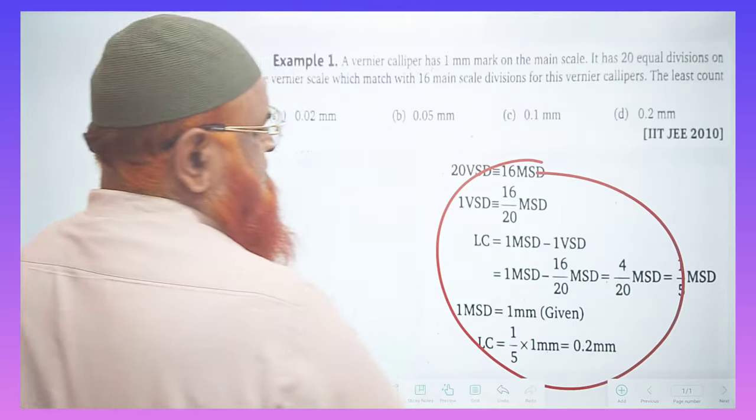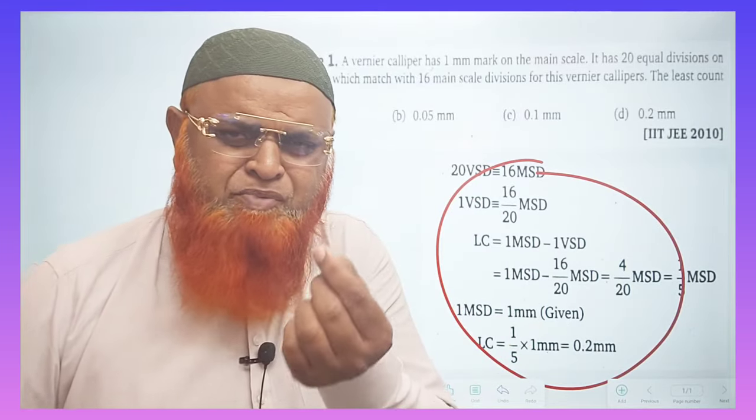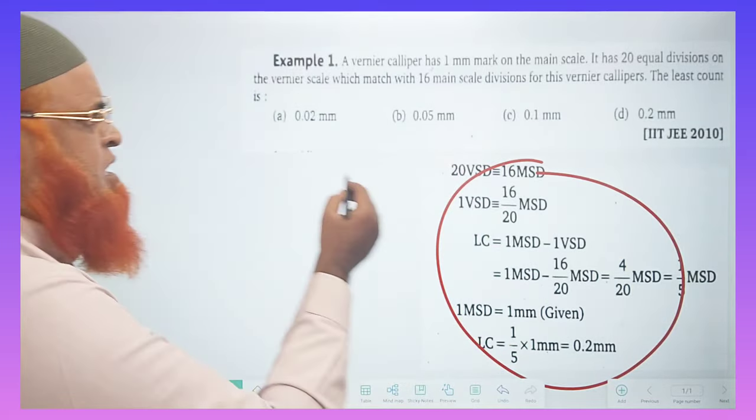This is a method given in the books. We can bypass this method and directly solve the problem by a simple shortcut formula. What is that? So you can just see.